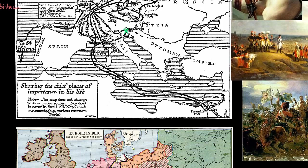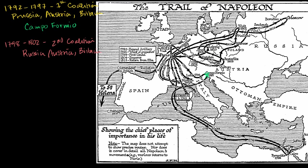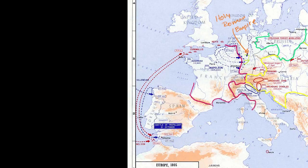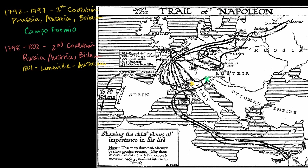Going back to the overview: the Second Coalition ended in 1801 with the Treaty of Lunaville. Once again, this was a defeat of the Austrians, mainly due to Napoleon's military capabilities. Napoleon was now in charge of France, and he led an Italian campaign against the Austrians. His victory at Marengo essentially forced Austria to concede, allowing Napoleon to take more territory along the Italian peninsula.